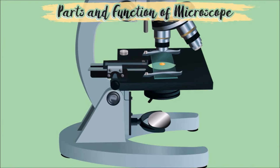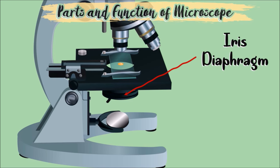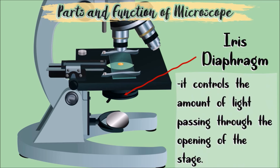This part of the microscope right here is called diaphragm or iris diaphragm. It controls the amount of light passing through the opening of the stage.